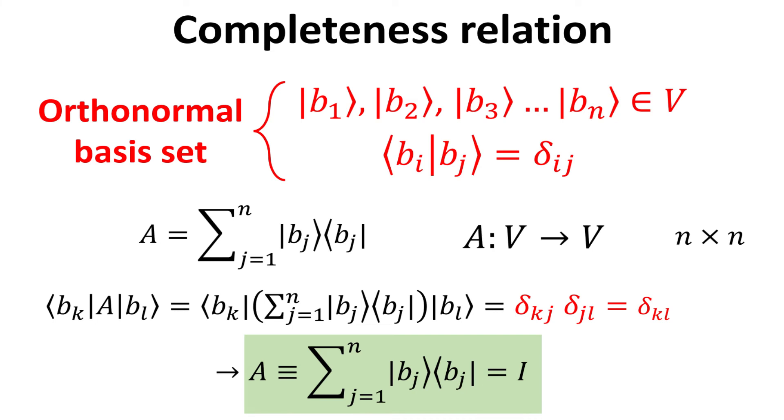To summarize, the completeness relation simply states that the sum of outer products constructed from an orthonormal basis set of kets is the identity operator.